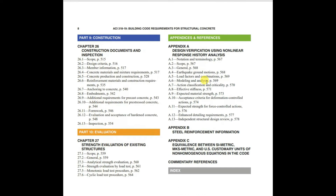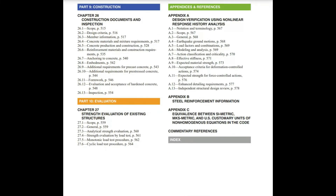After 27 chapters, we have appendices. Appendix A is design verification using non-linear response history analysis. Appendix B covers steel reinforcement information. Appendix C provides equivalence between SI metric, MKS metric, and US customary units for non-homogeneous equations in the code. That's all about the table of contents.